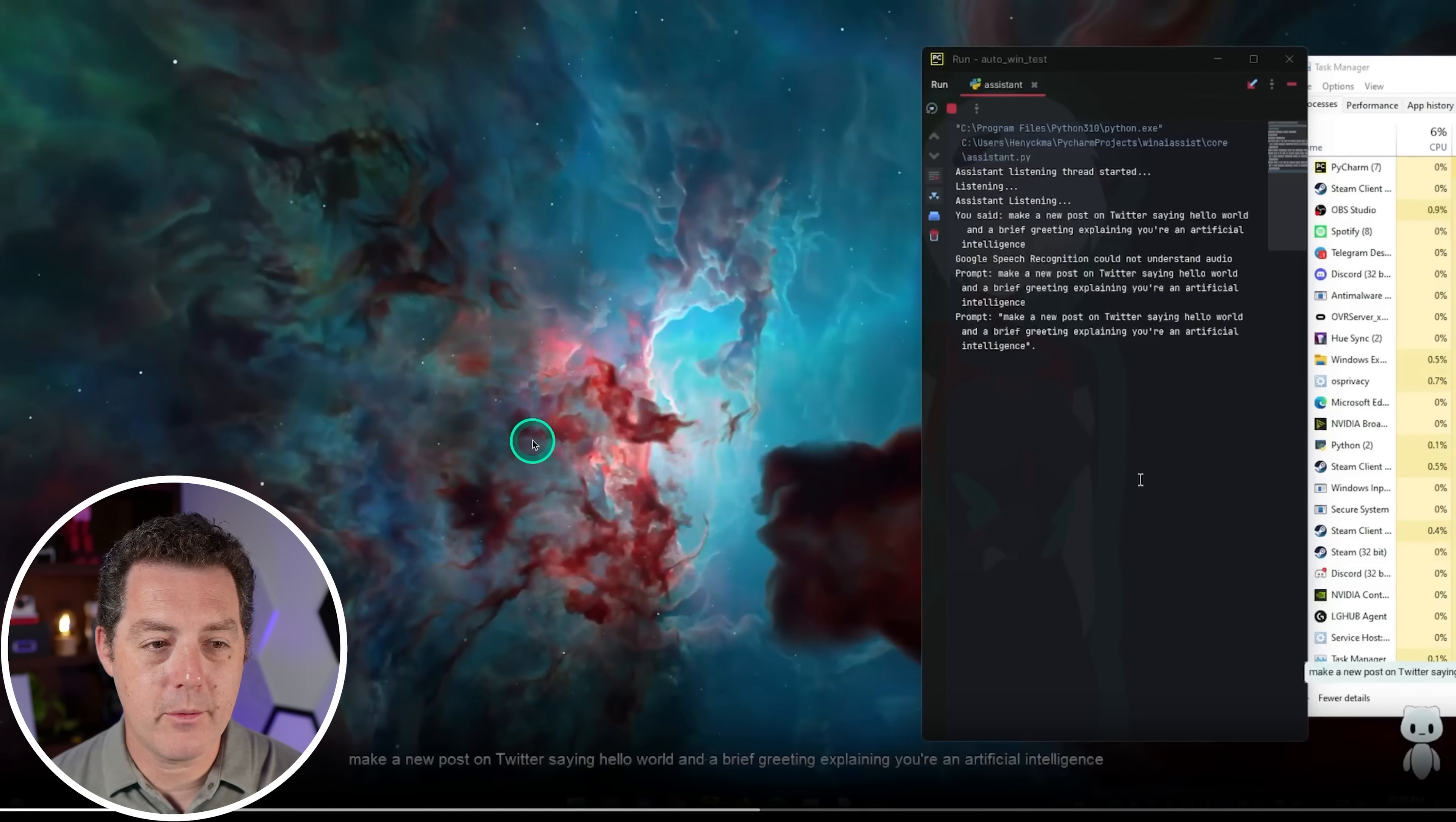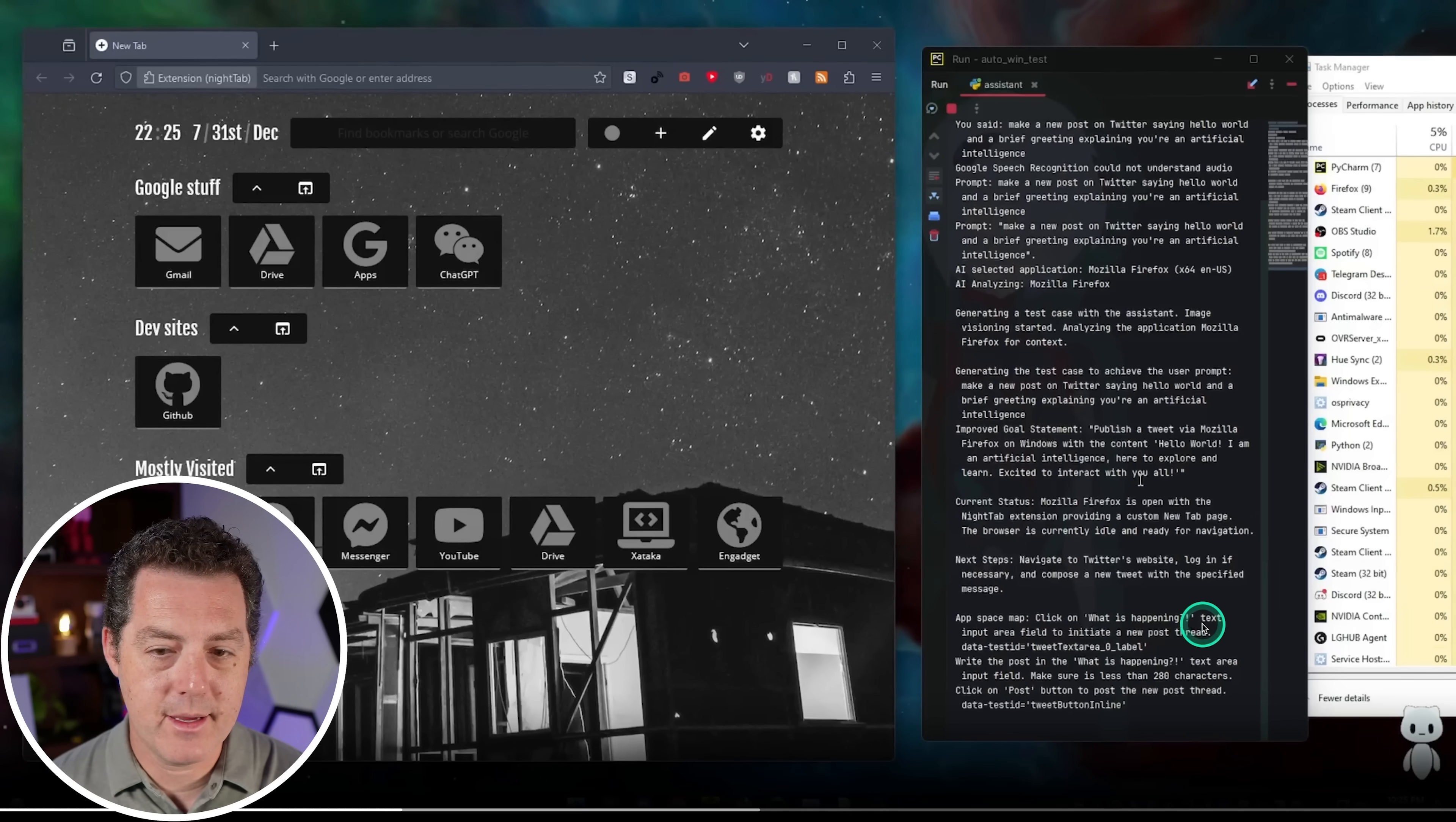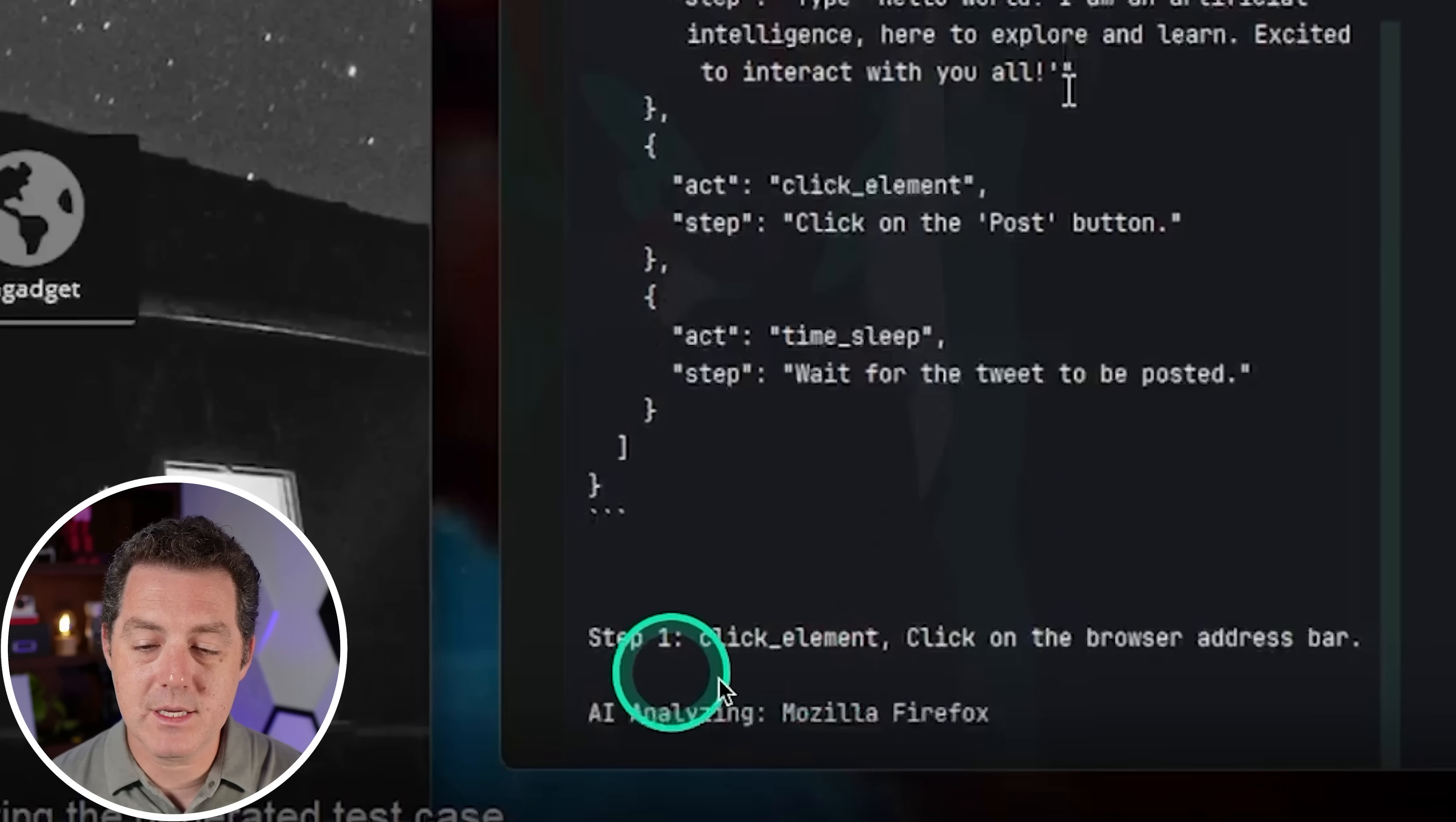All right, so let's look at this next example. By the way, this is an awesome background. So the user has given it the instruction, make a new post on Twitter saying, hello world, and a brief greeting explaining you're an artificial intelligence. And then here's the prompt. Here's another prompt. It is analyzing what to do, generating the test case. And then it actually, interestingly, iterates on the prompt automatically. And then it says current status. So that is where it's representing what it currently understands. It's basically the visualization at each step. So let's keep watching. So add space map. Click on what is happening. Okay. Then it generates the actions right here. So step, click on the browser address bar, enter twitter.com, wait for the Twitter homepage to load. So it's giving the entire set of actions it needs to accomplish. And it's going to go through it step-by-step. So it's actually asking it to do the planning up front. Well, let's watch it.